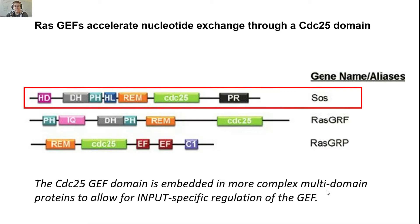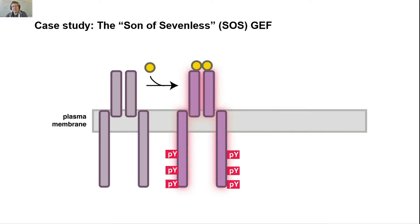Let's talk about one such molecule called SOS — son of sevenless — which is sort of the paradigm for thinking about regulated GEF activity. This GTPase signaling is triggered by the binding of growth factors to growth factor receptors. As you'll recall, when these different factors bind to their receptors, they trigger the phosphorylation of a variety of tyrosine residues on the internal side of the signaling receptor.